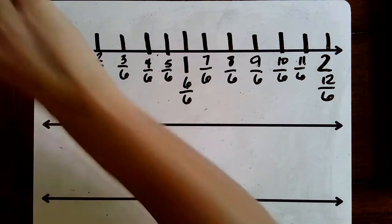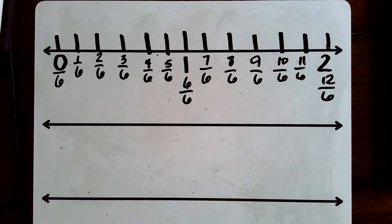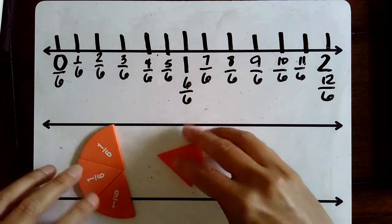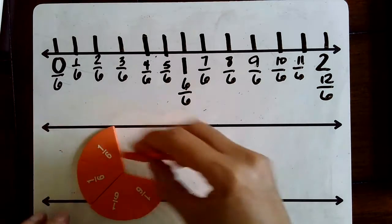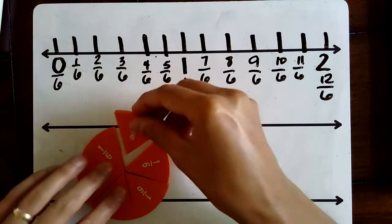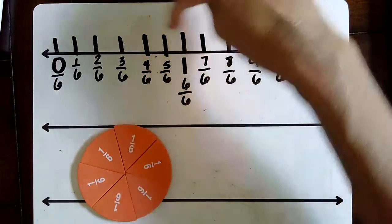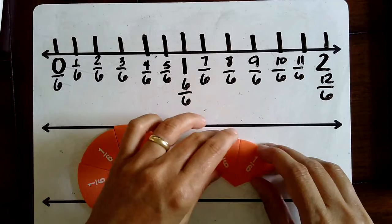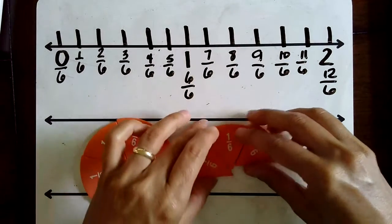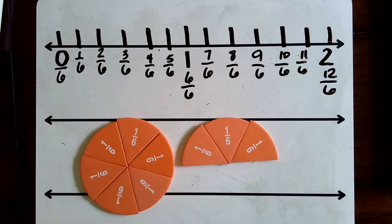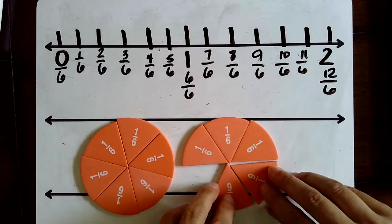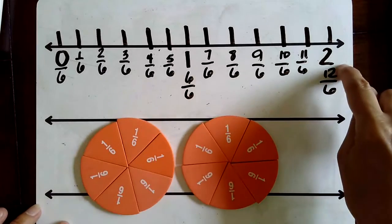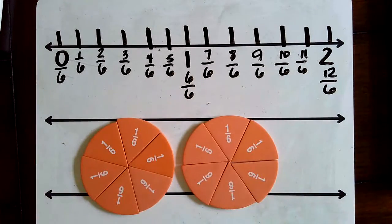Let me grab the circle fractions and let's start looking. Zero sixths, one sixth, two sixths, three sixths, four sixths, five sixths, six sixths — which is the same as one whole. Then seven sixths, which is the same as one whole and one sixth. Eight sixths, nine sixths — get those together — ten sixths, eleven sixths, and twelve sixths. Take a look: twelve sixths is exactly the same as two wholes.